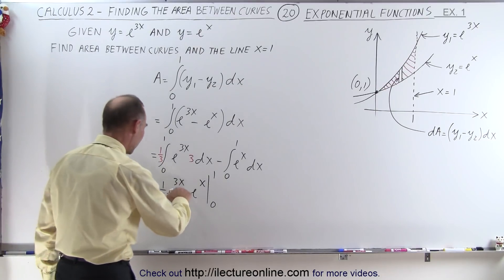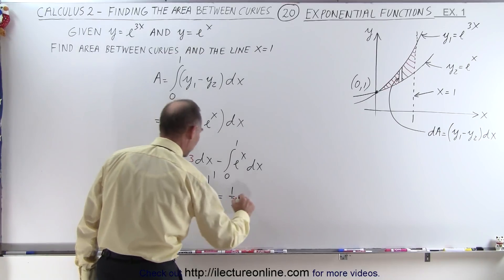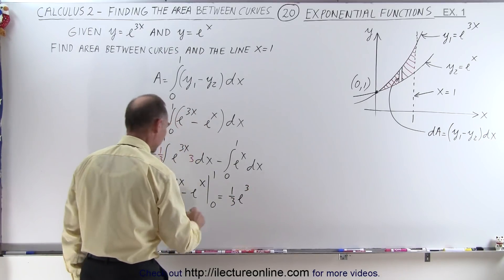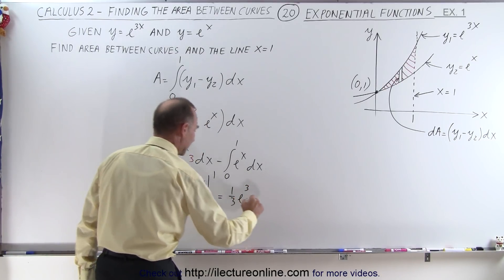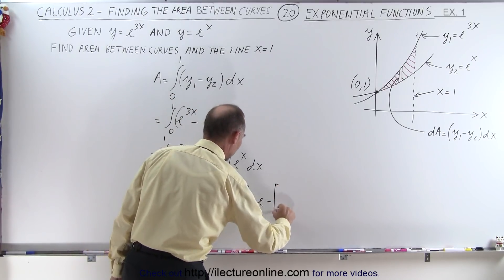So when I plug in the upper limit, I get this is equal to 1 third e to the 3 times 1, that's e to the 3, minus e to the 1st power.